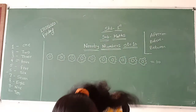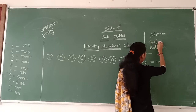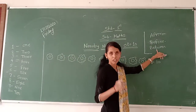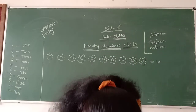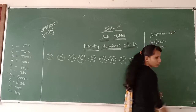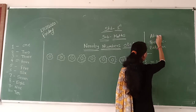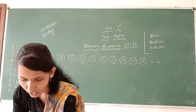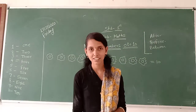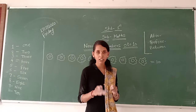Before number is what has already happened. And between means in the middle. So after number is what happens next, before means what has already happened, and between means in the middle.